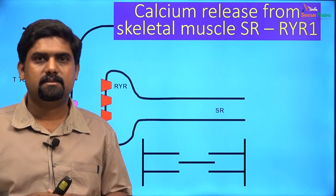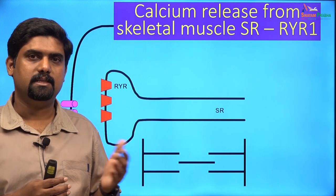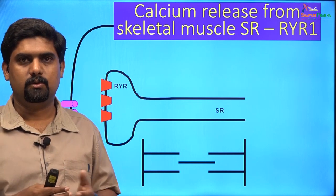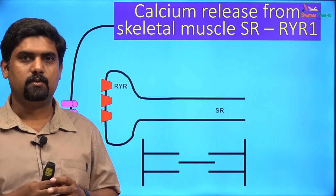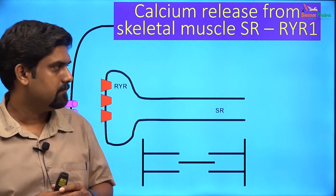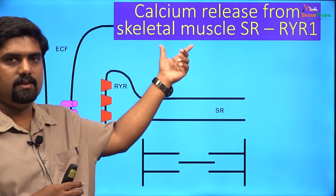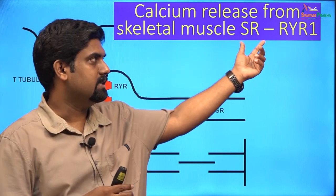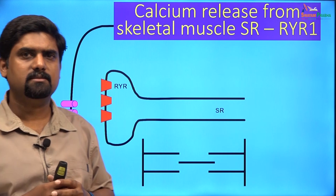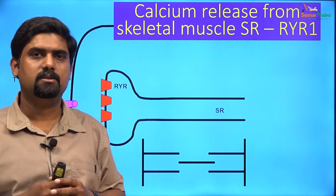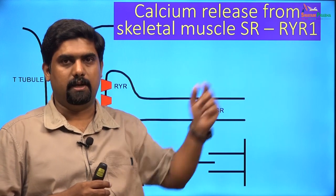We have now discussed various calcium transporters on the cell membrane that bring calcium from outside to inside. Next, we will discuss calcium transporters present on organelles — specifically calcium release from skeletal muscle sarcoplasmic reticulum through ryanodine receptors. There are three classes: ryanodine receptor 1, 2, and 3. The type present in skeletal muscle is ryanodine receptor 1.